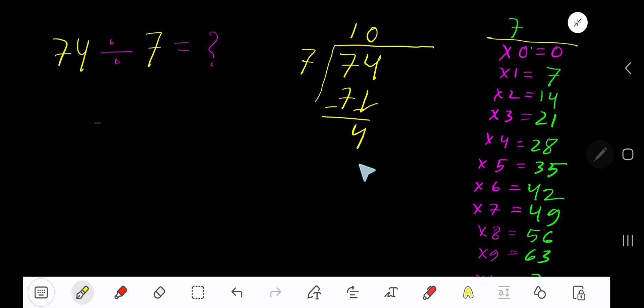0 times. 0 times 7 is 0. Subtract, we get 4. So our answer is 10 remainder 4. If you want to write your answer in decimal form, convert this whole number into a decimal. Place a decimal point and add zeros. Bring down a zero. Before the zero there is a decimal, and the decimal must come to the quotient directly.